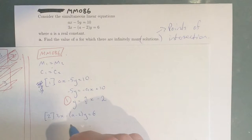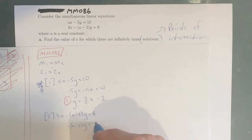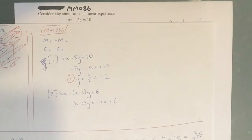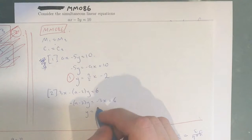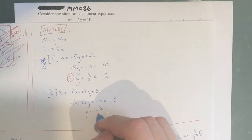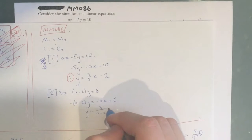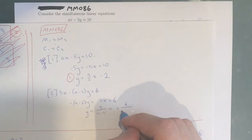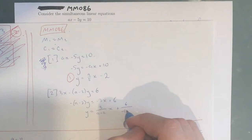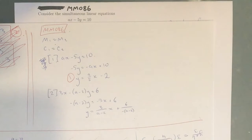Our second equation is 3X minus (A minus 2)Y equals 6, which gives us negative(A minus 2)Y equals negative 3X plus 6, which then gives us Y equals (3/(A minus 2))X plus 6/(negative(A minus 2)). That's our second equation.